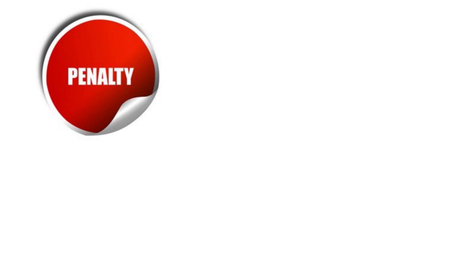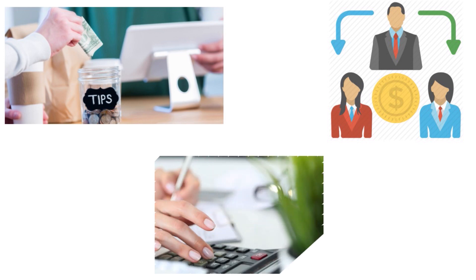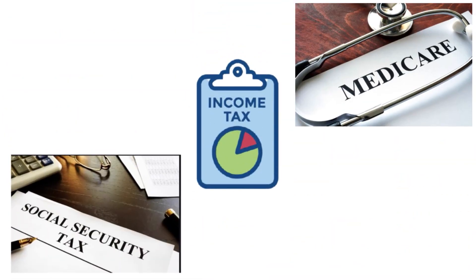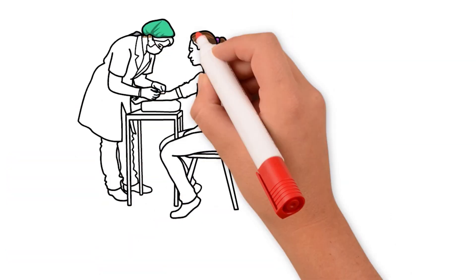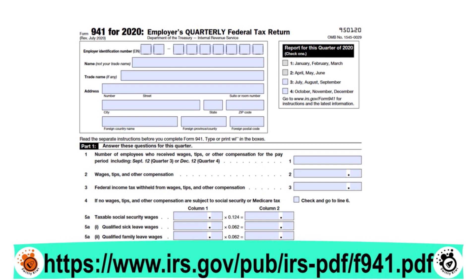Here are a few pieces of info you need to include on Form 941: wages you have paid, tips your employees have reported to you, federal income tax withheld from your employees, employer and employee shares of Social Security and Medicare taxes, additional Medicare tax withheld from employees, current quarter's adjustment to Social Security and Medicare taxes for fractions of cents, sick pay, tips and group term life insurance, and qualified small business payroll tax credit for increasing research activities. After accounting for all these items, Form 941 will tell you how much money you should have remitted to the government to cover your employment tax responsibilities for the quarter. FICA taxes include both Social Security and Medicare.